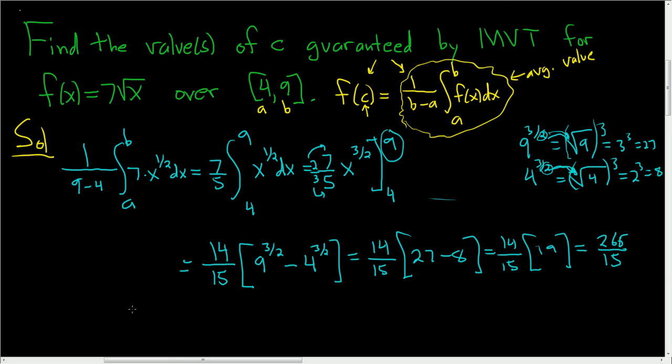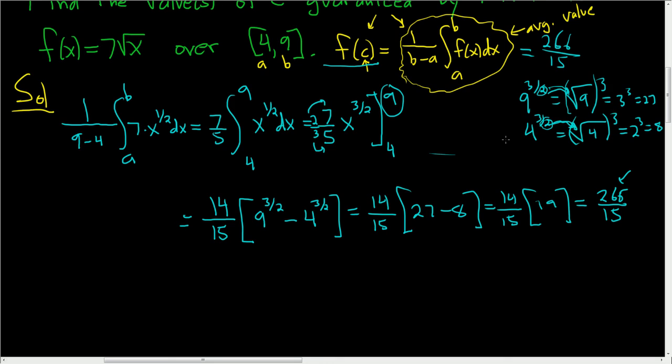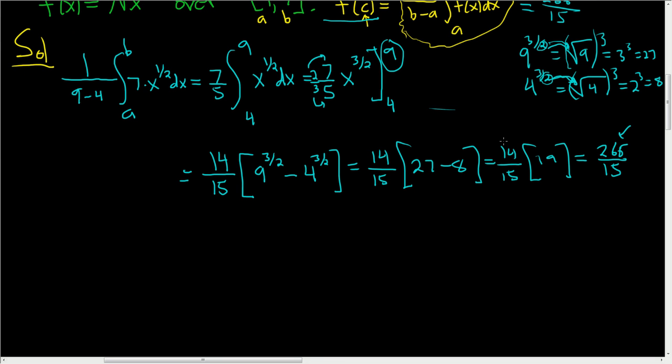Okay. So now we have to find C. So to find C, we just set F of C equal to this. This here ended up being 266 over 15. So F of X was 7 times the square root of X. Now you can use X, but let's be pro about it and use C. So we have F of C equals 266 over 15. So this is 7 square root of C, because F of X is 7 square root of X. So F of C is 7 square root of C. Equals 266 over 15.